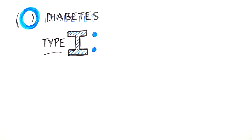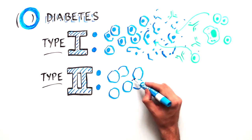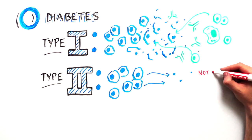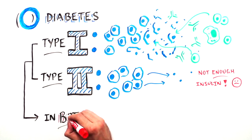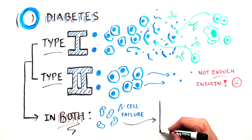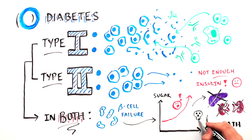In type 1 diabetes, beta cells are destroyed by the body's immune system. In type 2 diabetes, beta cells become dysfunctional and cannot produce enough insulin. In both cases, the loss of functional beta cells lead to elevations in blood sugar levels that damages organs and, if untreated, can lead to death.